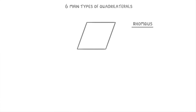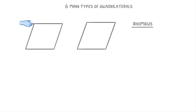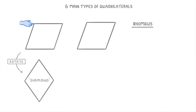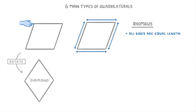A rhombus is kind of like a square that's being pushed over. Imagine you had a square and pushed it at the top left corner — it would sort of lean over to the right, and the shape you're left with is a rhombus. If you rotate it a little bit it ends up looking like a diamond, and in fact you might sometimes hear a rhombus called a diamond, but rhombus is the proper name for it.